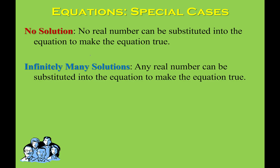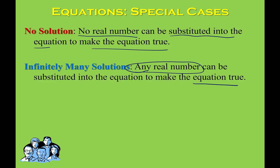So here's what it means to have no solution versus infinitely many solutions. For no solution, it means there is no real number — no irrational number, no rational number, no integer, no fraction, no decimal — that can be substituted into the equation to make the two sides equal. For infinitely many solutions, it means that any number you substitute into the equation will make it true. You want to know those two definitions because they'll be part of your explanations.